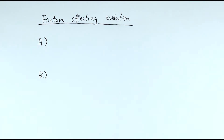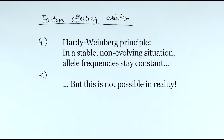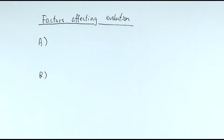In this video we're looking at the factors that would affect evolution. In another video I've talked about the Hardy-Weinberg principle, which states that the allele frequency will stay the same as long as the population is not changing and not evolving. But in reality, evolution must be occurring no matter how slow it might be, because it's impossible to expect that there is absolutely no mutation and complete random mating amongst a large or even small population. So here are the four major factors that would affect evolution.